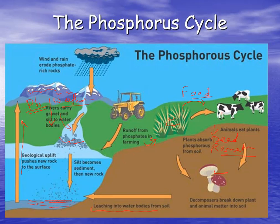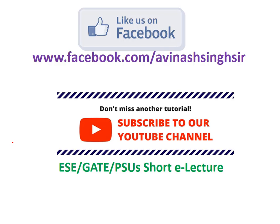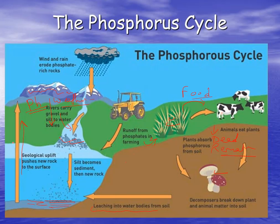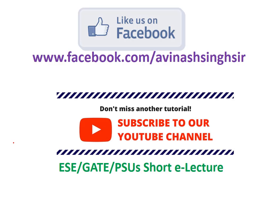After millions of years, a new rock is formed which is rich in phosphorus, and hence the cycle is completed. I hope it is clear to you. If you like our video, please do subscribe to our YouTube channel and you can also like our Facebook page.